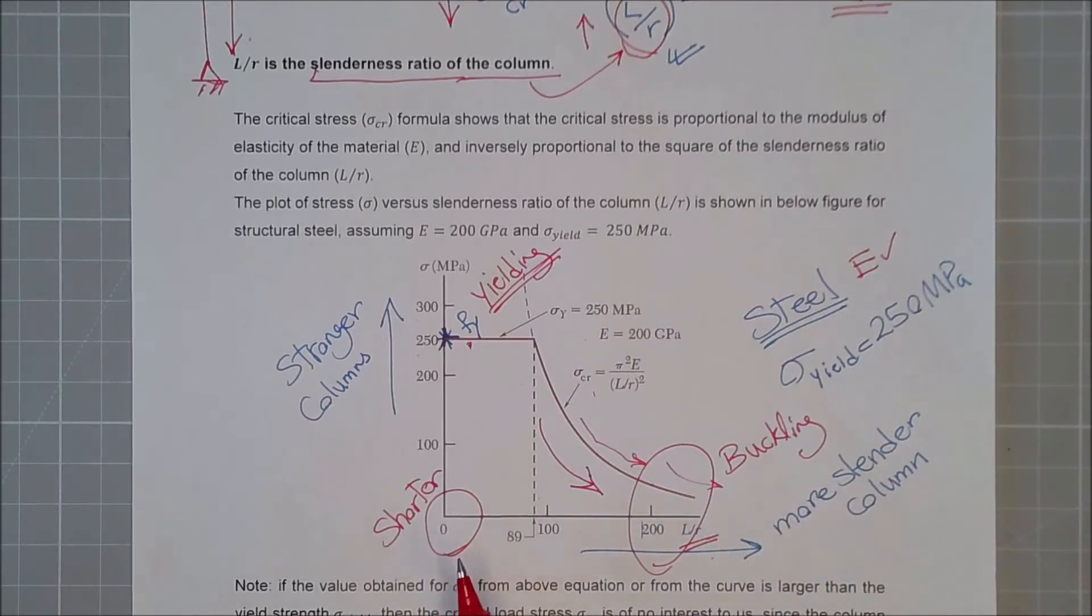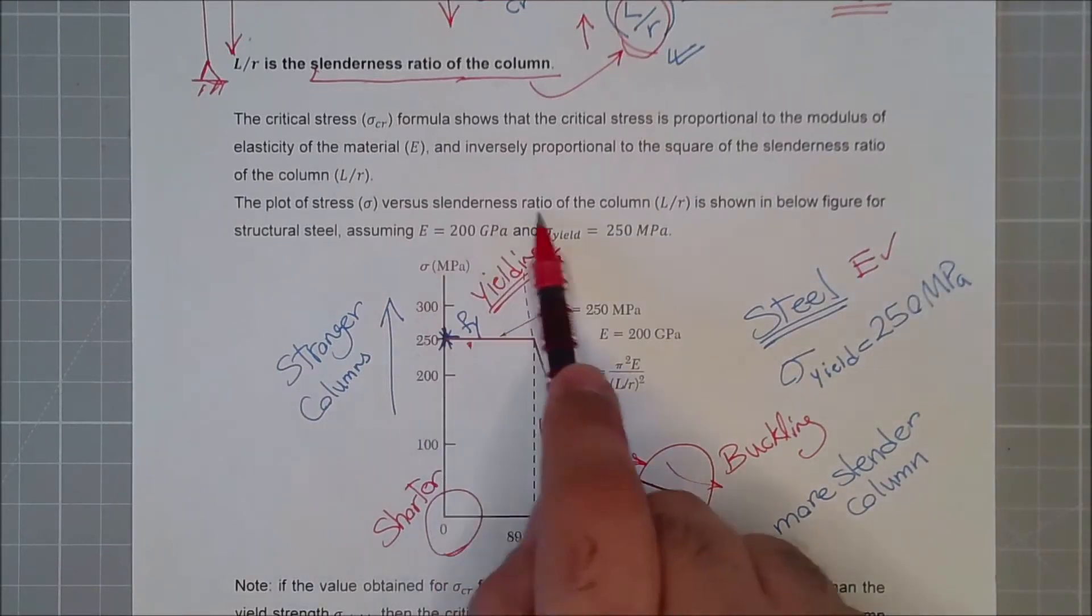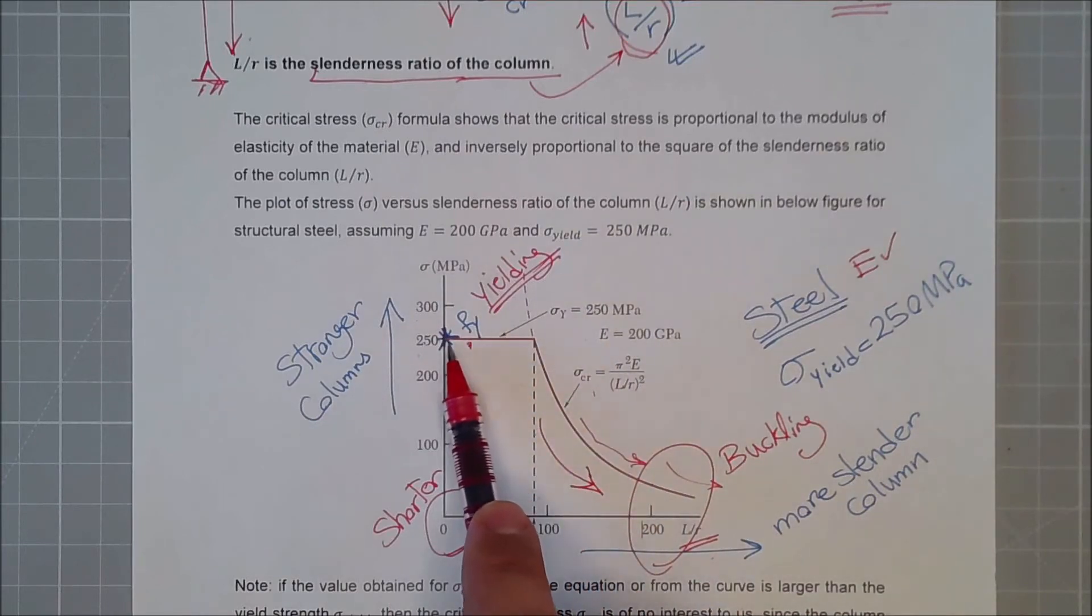The more shorter and stocky column you have, meaning the slenderness ratio is smaller, means that there is a higher chance that your failure will be due to reaching to the yielding point and passing it. So your failure will be due to plastic deformation.